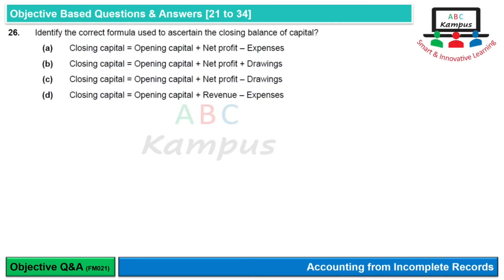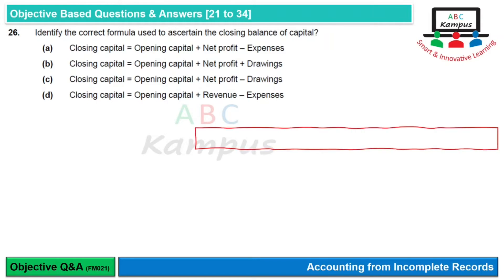Question 26: Identify the correct formula used to ascertain the closing balance of capital। Business equation relevant है: closing equity = opening equity + amount invested + profit − drawings। इन options में से जो बाकी correct information है वो option C है।